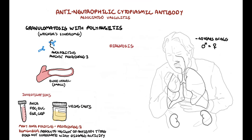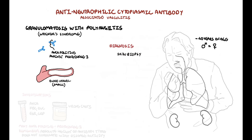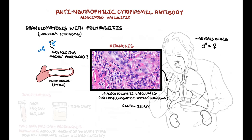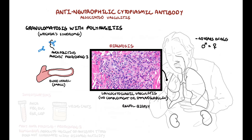Diagnosis of granulomatosis with polyangiitis, or any ANCA-associated vasculitis, is confirmed by biopsy, usually of the skin or kidneys, not the lung. The skin with the rash will show accumulation of neutrophils in the vessels, termed leukocytoclastic vasculitis, with little or no complement and immunoglobulins. Here is a biopsy of the skin showing the classic leukocytoclastic vasculitis — the accumulation of neutrophils in the vessels and surrounding area.